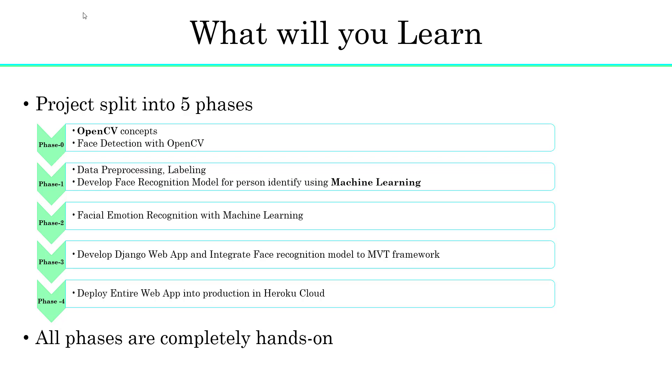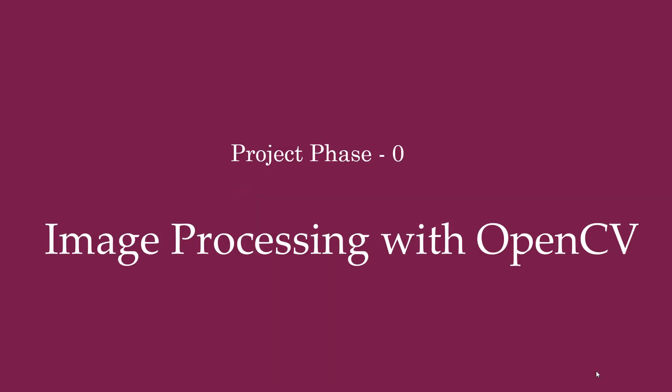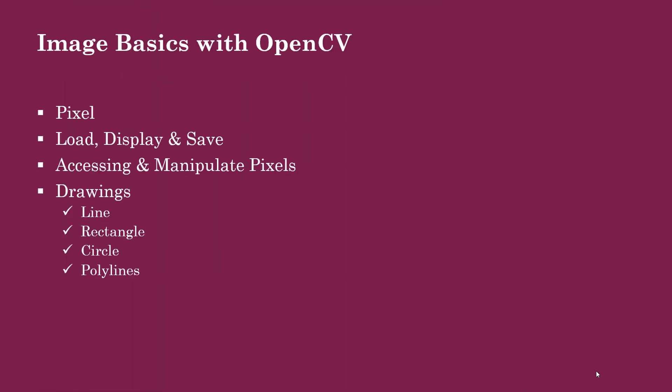This hands-on approach helps you to truly understand the algorithms. Using this course, you can develop any type of computer vision project from scratch. Now let's start the class with project Phase 0 — image processing with OpenCV — beginning with Image Basics with OpenCV and Python. These are the topics we are going to discuss in the next lesson, and I will see you there.